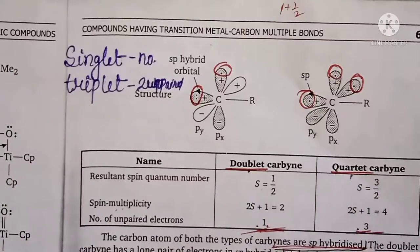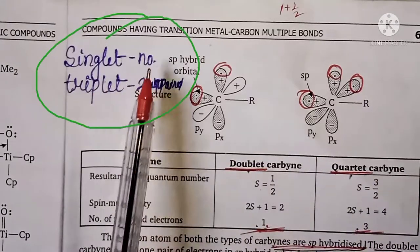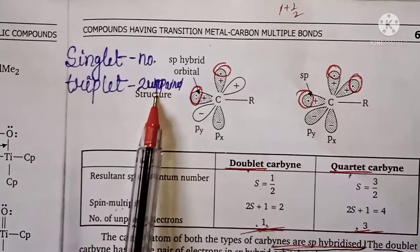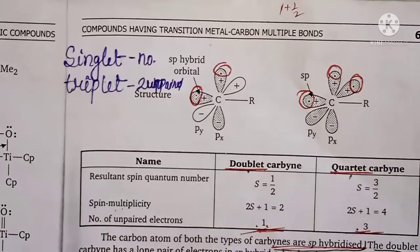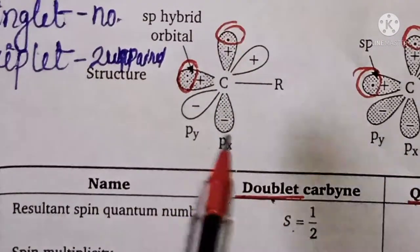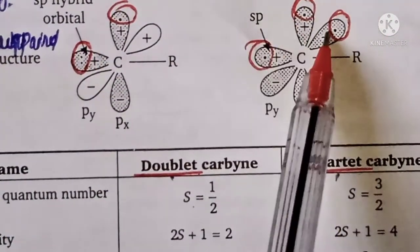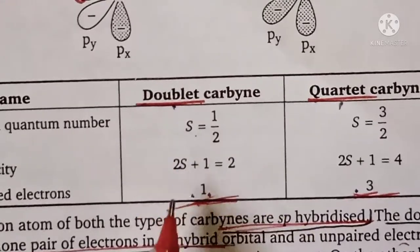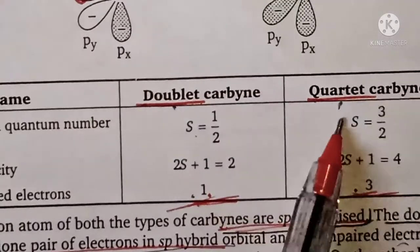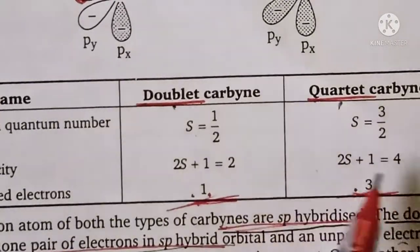Generally, there are two types of carbyne complex. As you saw with carbene: singlet and triplet carbene, and also doublet carbene and quartet carbene. Singlet has no unpaired electron, triplet has two unpaired electrons, doublet has one unpaired electron, and quartet carbene has three unpaired electrons. For one unpaired electron, spin multiplicity = 2S+1 = 2. For three unpaired electrons, spin multiplicity gives 4.